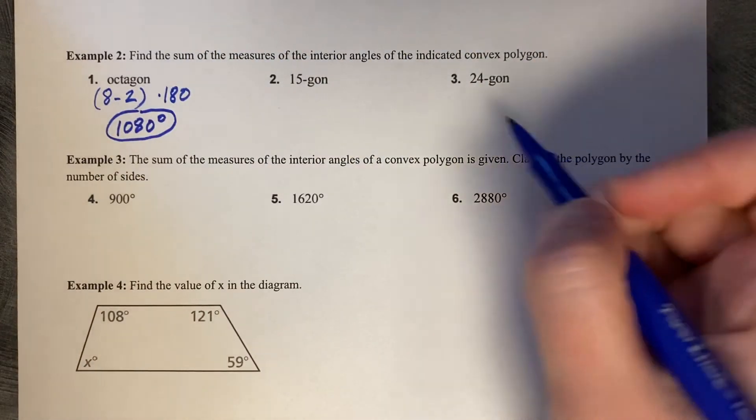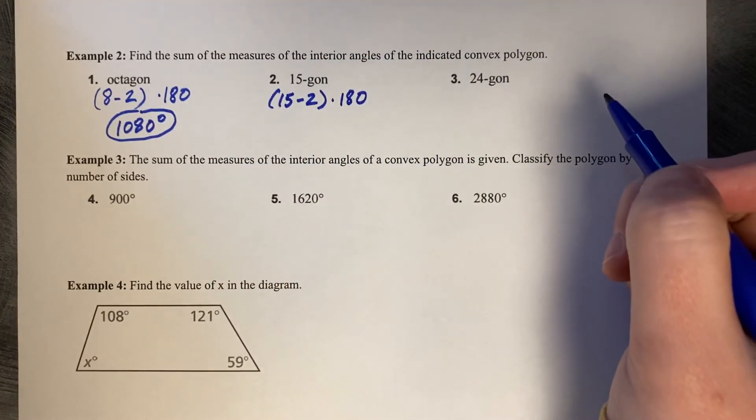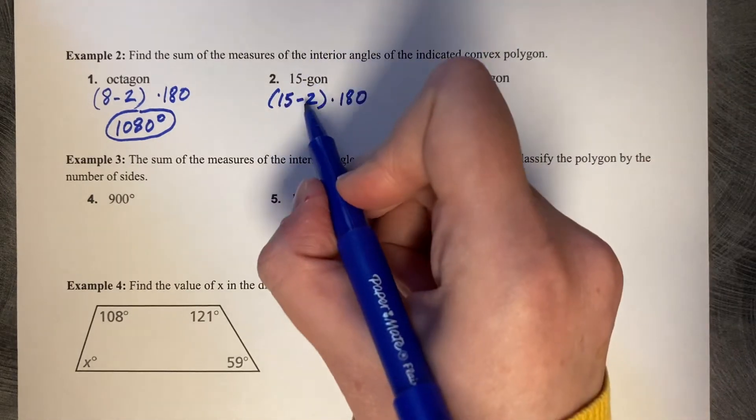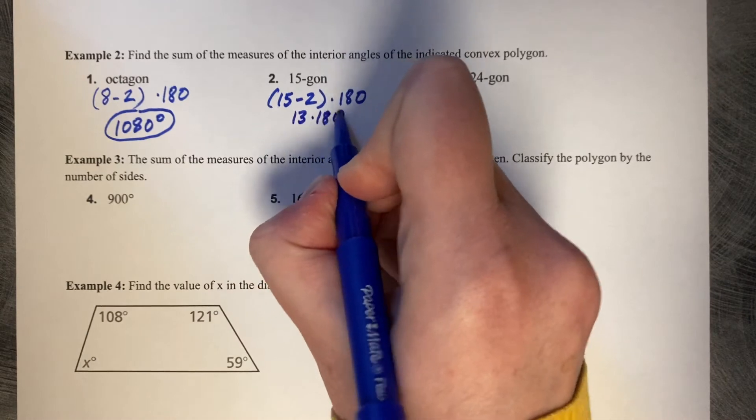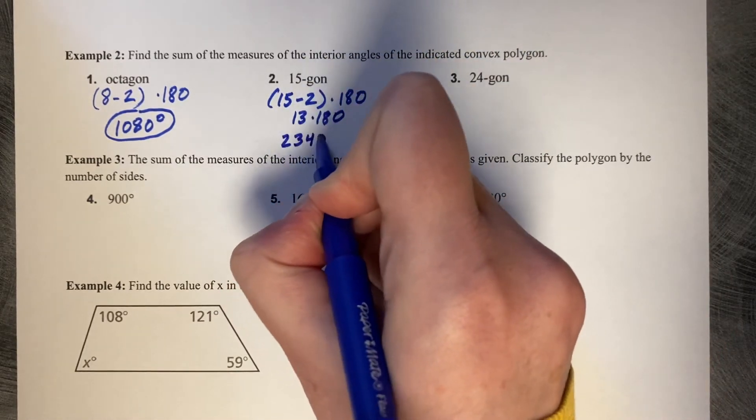How about a fifteen-gon? Fifteen sides minus two times 180. And you can type all of that into your calculator just all at once. So thirteen times 180. And then that's 2,340 degrees.